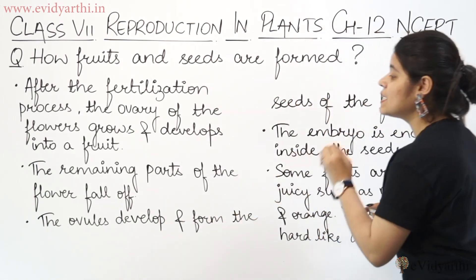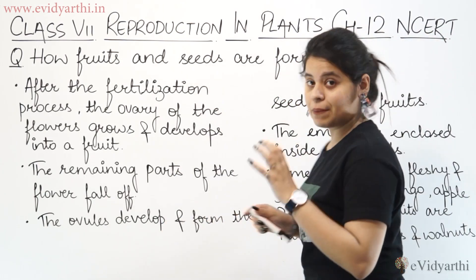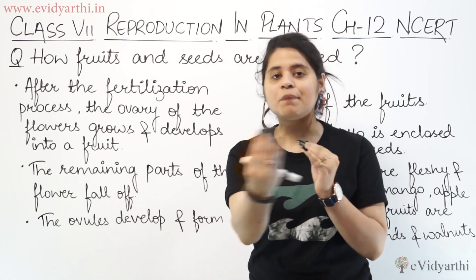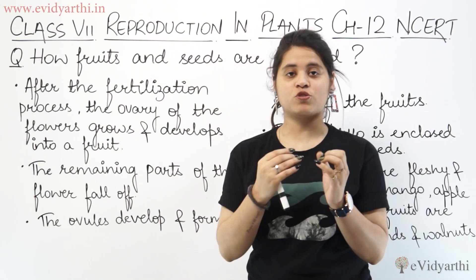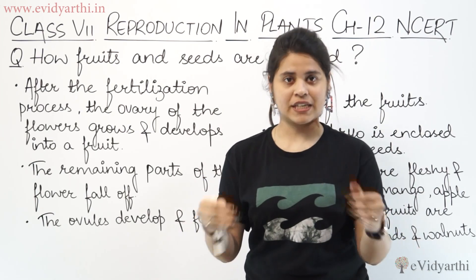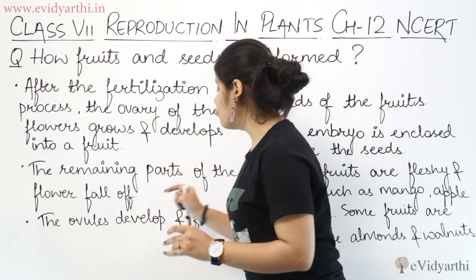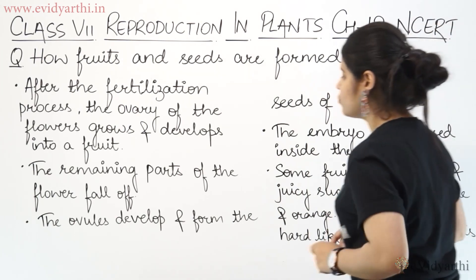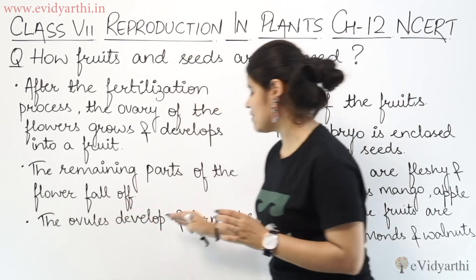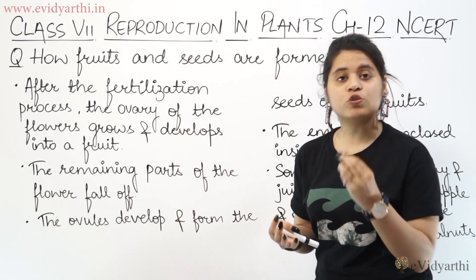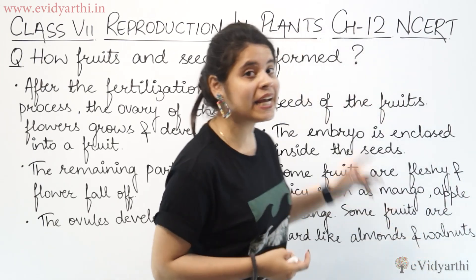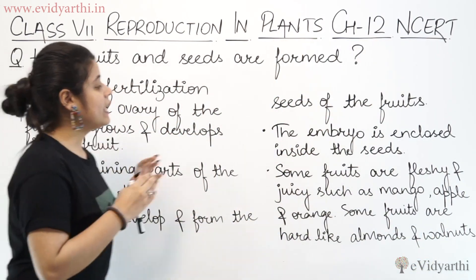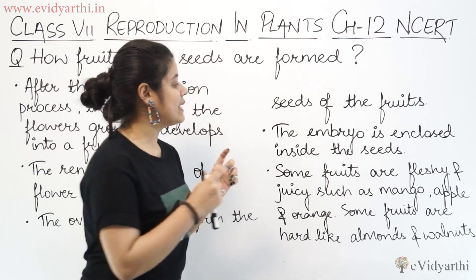The remaining parts of the flower fall off. The ovules develop and form the seeds of the fruit. The embryo is enclosed inside the seeds.